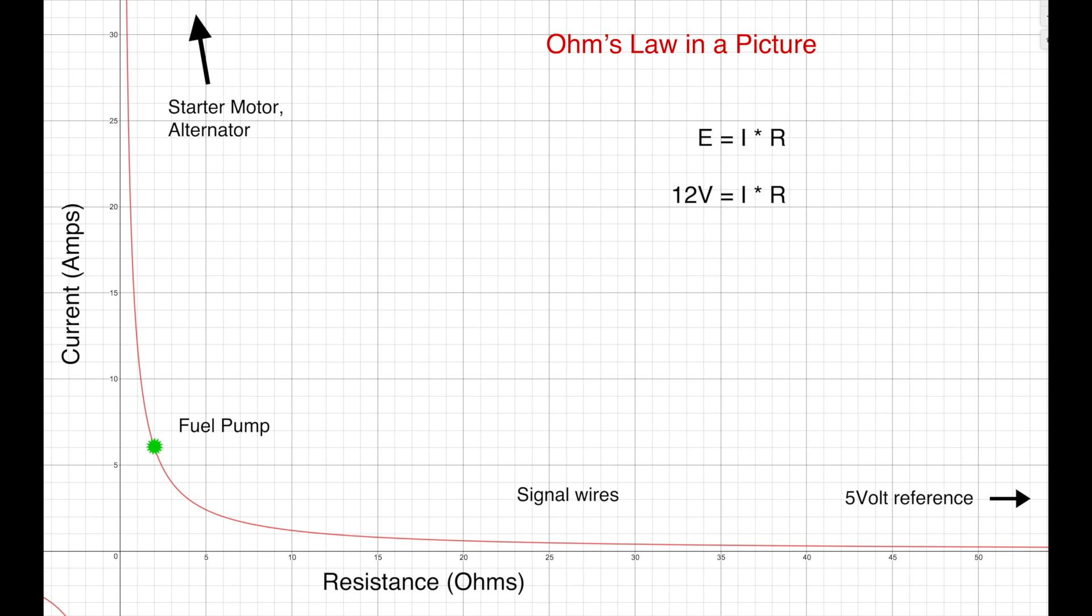The 5 volt reference circuit lives way off the scale to the right with an internal 5,000 ohm resistor to protect the PCM from excessive current. Notice that the flat slope of this side of the curve means you can have a big change in resistance without causing any meaningful change in current.